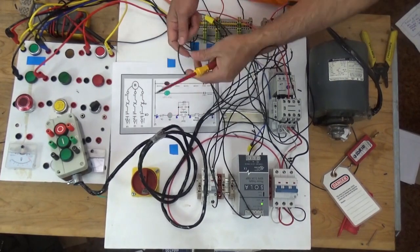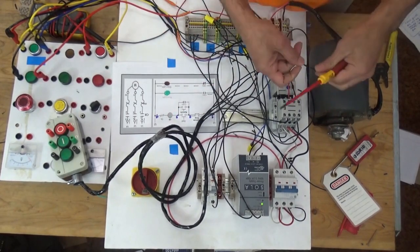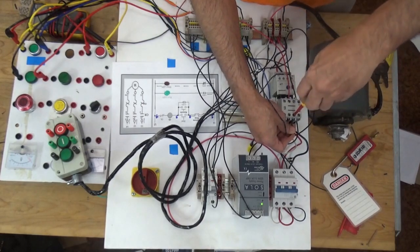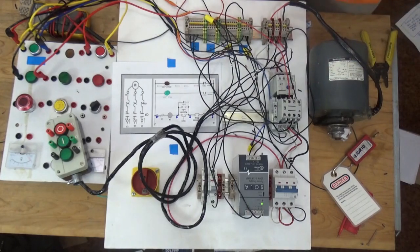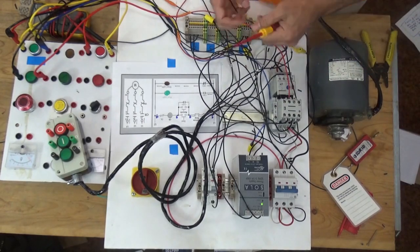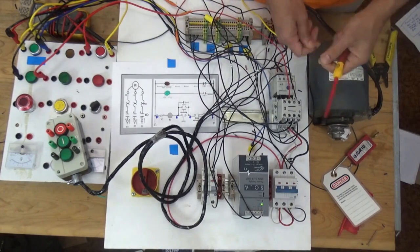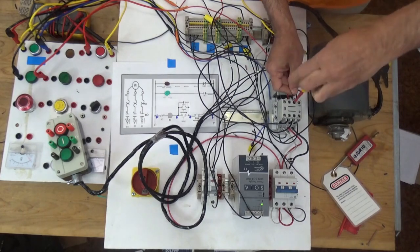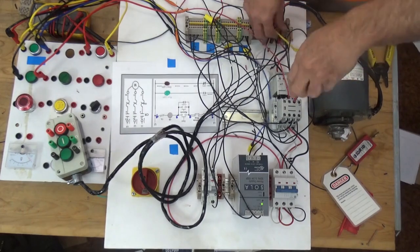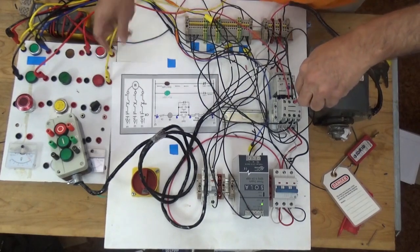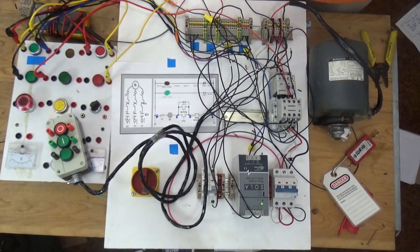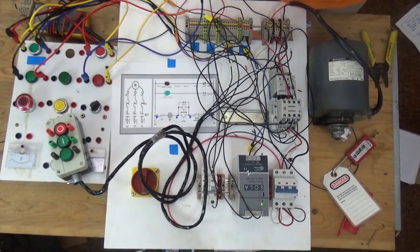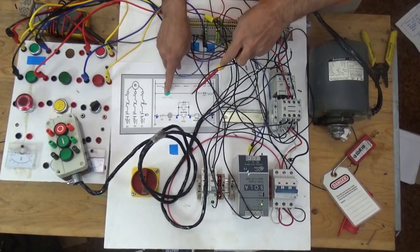Next is we're going to connect normally closed for our stop indication light. We're going to connect now going to our normally closed from our normally closed, going to lights. Lights. From our two of lights going to four.